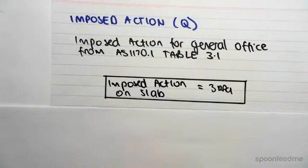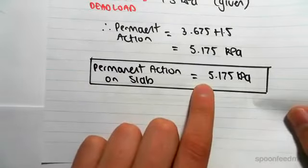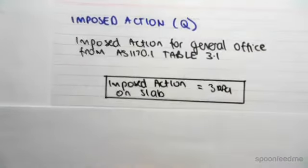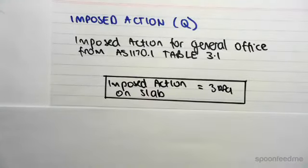Okay, so the imposed action on the slab is 3 kilopascals, permanent action 5.175 kilopascals. Pretty simple stuff. We'll see you in the next video.